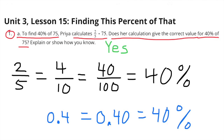Yes, she is correct, because the fraction 2 fifths is equivalent to 4 tenths, which is also equivalent to 40 hundredths, and 40 hundredths is 40%.